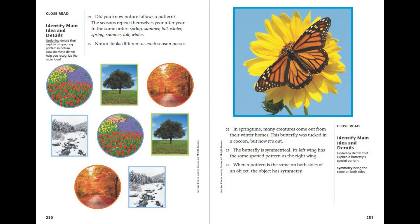This butterfly was tucked in a cocoon, but now it's out. The butterfly is symmetrical — its left wing has the same spotted pattern as the right wing. When a pattern is the same on both sides of an object, the object has symmetry.